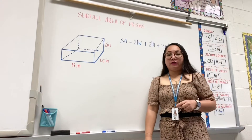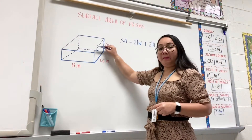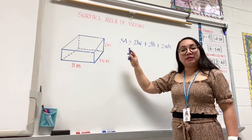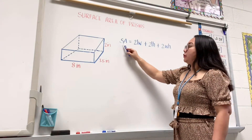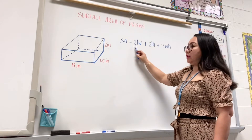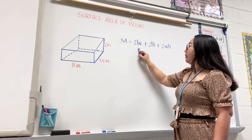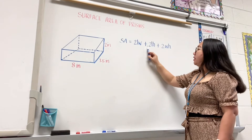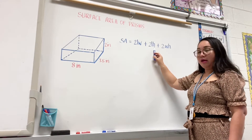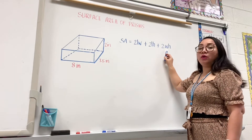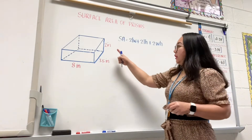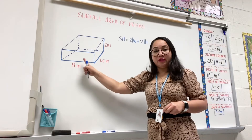To solve for the surface area of the box, I will use the formula. SA stands for surface area. The surface area of a rectangular prism is equal to two times length times width, plus two times length times height, plus two times width times height. I will substitute the dimensions of this box into the formula.